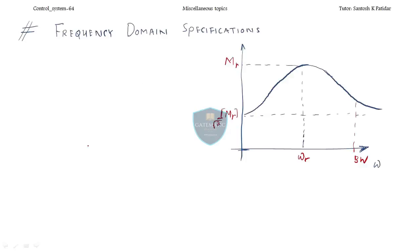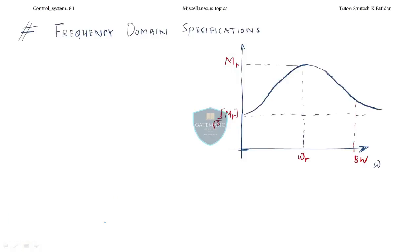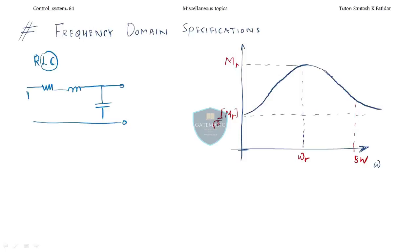The second topic today is frequency domain specification. We are taking the second order system. The best example of a second order system is the RLC circuit, because we have only two memory elements. We apply input and take the output, and we will derive the transfer function of this RLC circuit.